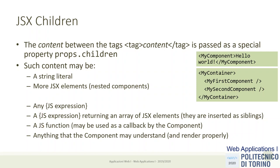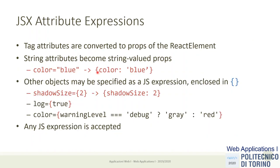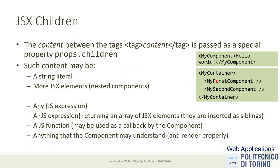Children can also be computed expressions or callback functions. In some cases you can pass other types of objects that the component will interpret and decide how to render. Children specified inside the element are automatically included in the rendering process. The component can access children through the special property 'props.children' — just as 'color' becomes 'props.color' and 'shadowSize' becomes 'props.shadowSize', children is also a prop.